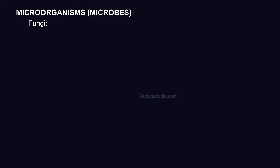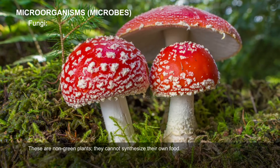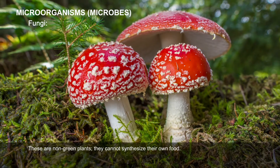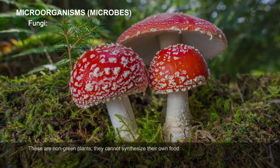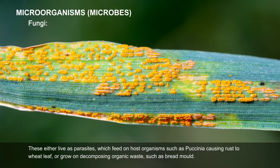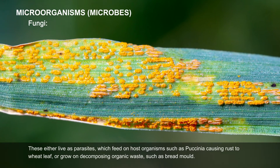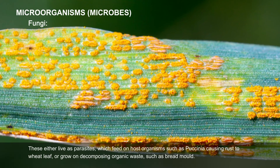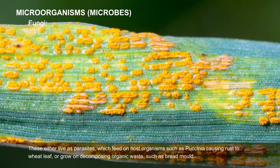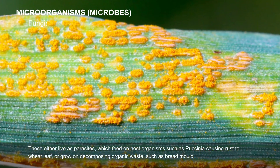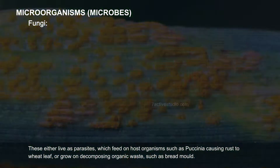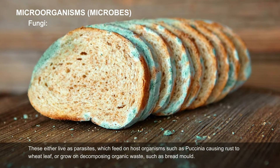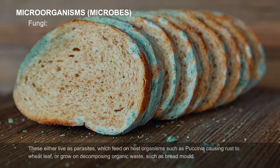Fungi. These are non-green plants that cannot synthesize their own food. They either live as parasites which feed on host organisms — such as Puccinia, causing rust to wheat leaf — or grow on decomposing organic waste, such as bread mold.